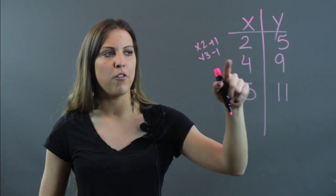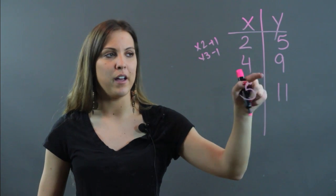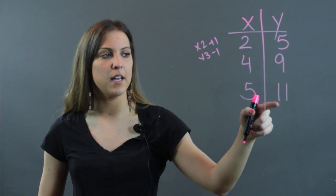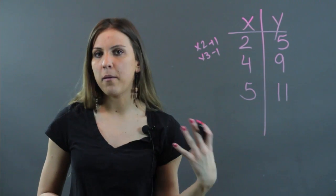If I do 4 times 3 is 12 minus 1 is 11, I don't get 9. But if I do 4 times 2 plus 1, I do get 9. If I do 5 times 2, I get 10 plus 1 is 11. So that means I've found my relationship.